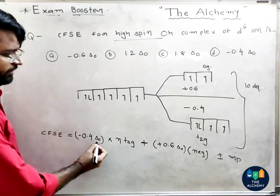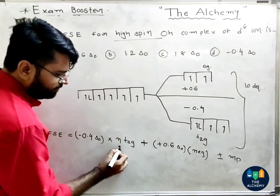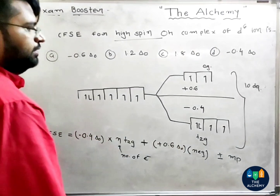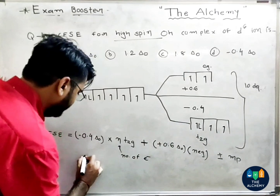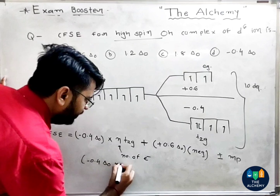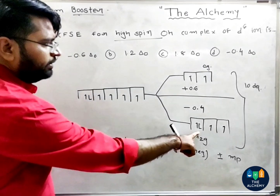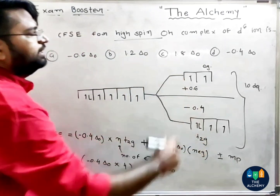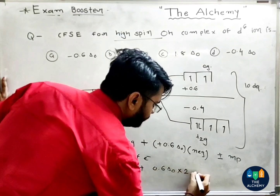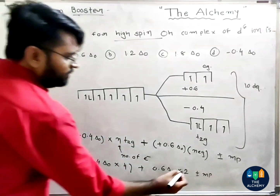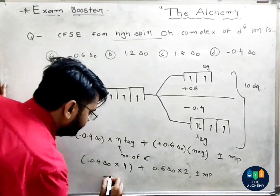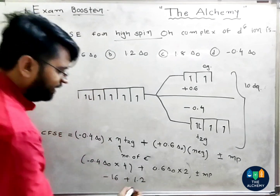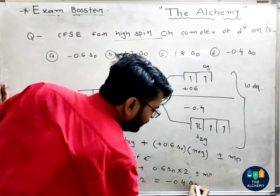Now applying this to d7 high spin octahedral: n_T2G equals the number of electrons in T2G. For d7 high spin, T2G has 5 electrons and EG has 2 electrons. So CFSE = (−0.4 × Δo × 5) + (0.6 × Δo × 2) = −2.0Δo + 1.2Δo.